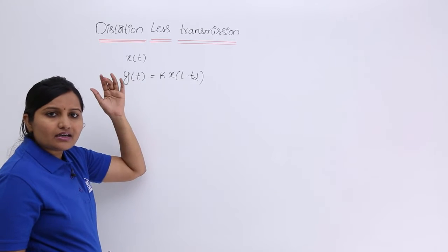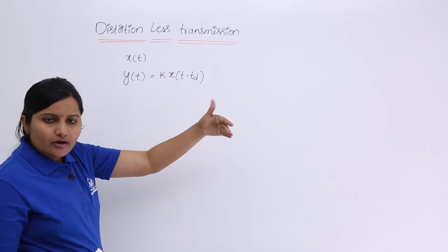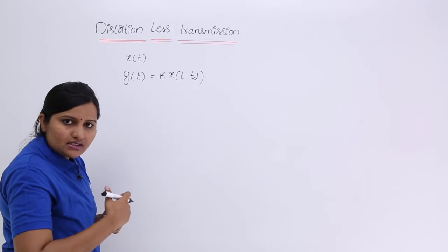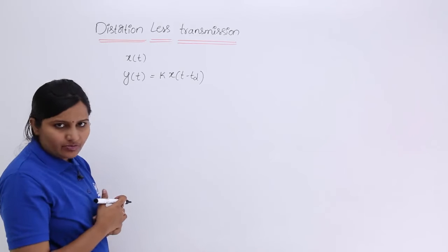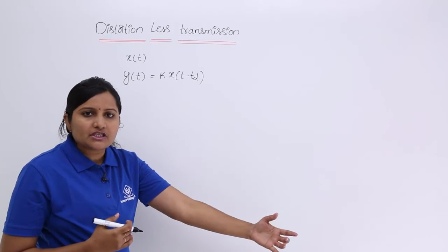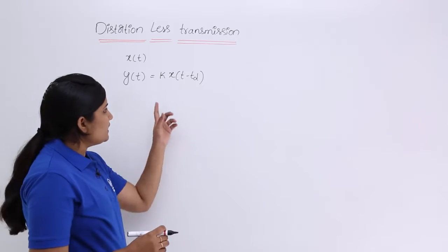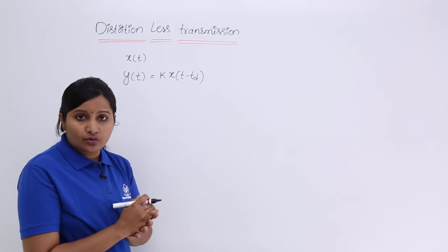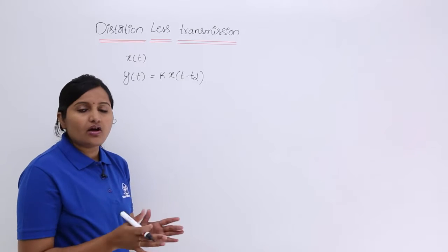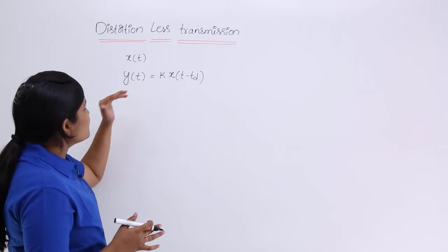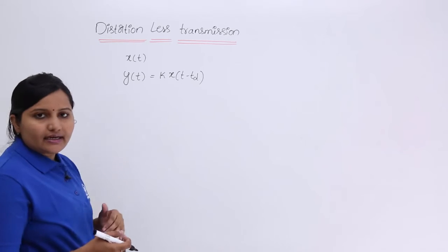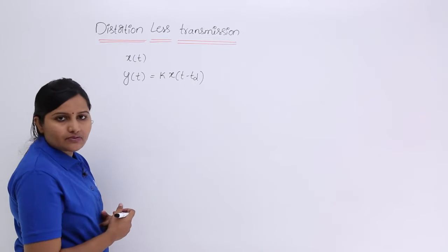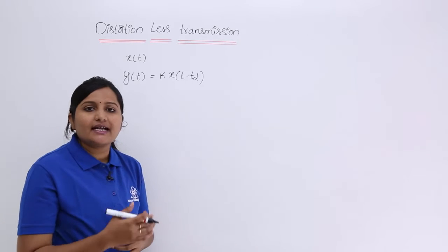Here y(t) is the transmission output. For example, if you have a transmission line, the output of the transmission line is y(t). That must be expressible in terms of your transmitted signal only — you should not get any other signal or any other frequency. The condition for distortionless transmission is: y(t) = K · x(t - TD). Now I will take the Fourier transform on both sides to calculate the phase and frequency spectrum.